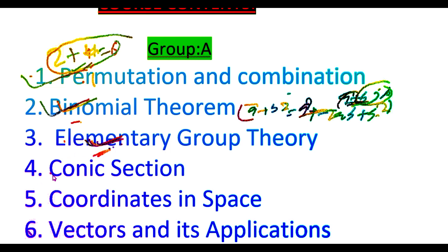The fourth topic is conic section, which is related to the intersection of a plane and a cone. Different curves — such as parabola, ellipse, and circle — will be studied under this topic. The fifth topic is coordinate in space, which is related to 3D geometry and points in space.